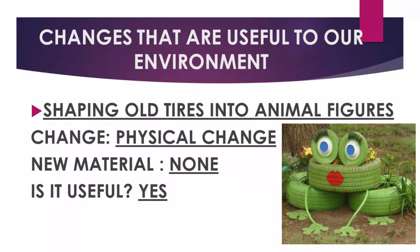Our fourth example is shaping old tires into animal figures. What change is it? Physical change. Is there a new material formed? None, because it is still a tire — we just paint it to make it more beautiful. Is it useful? Yes, it can beautify our environment.